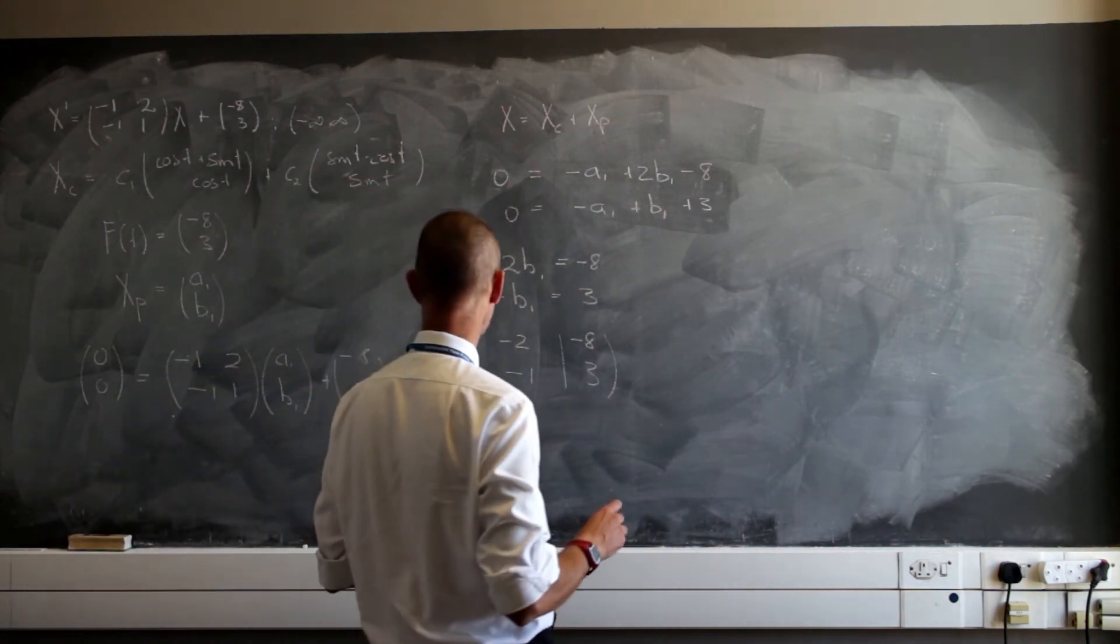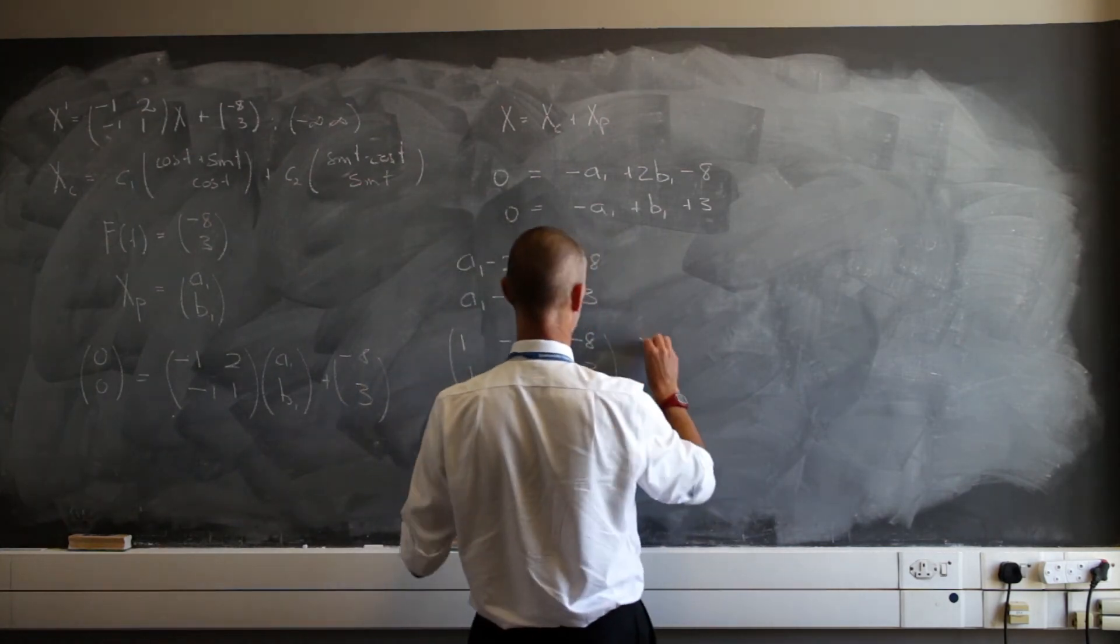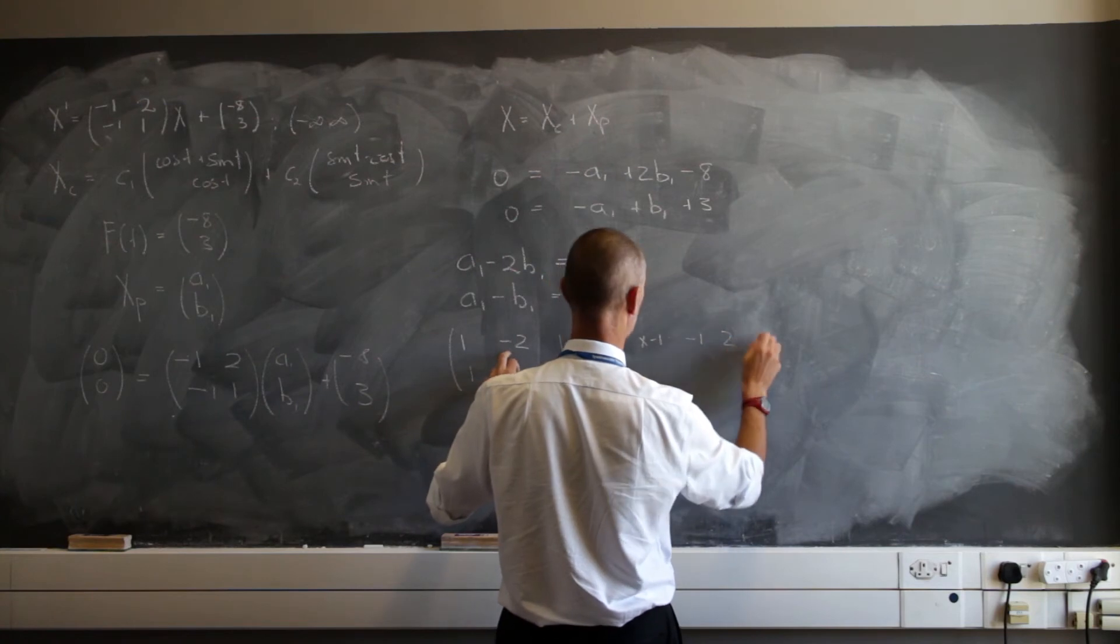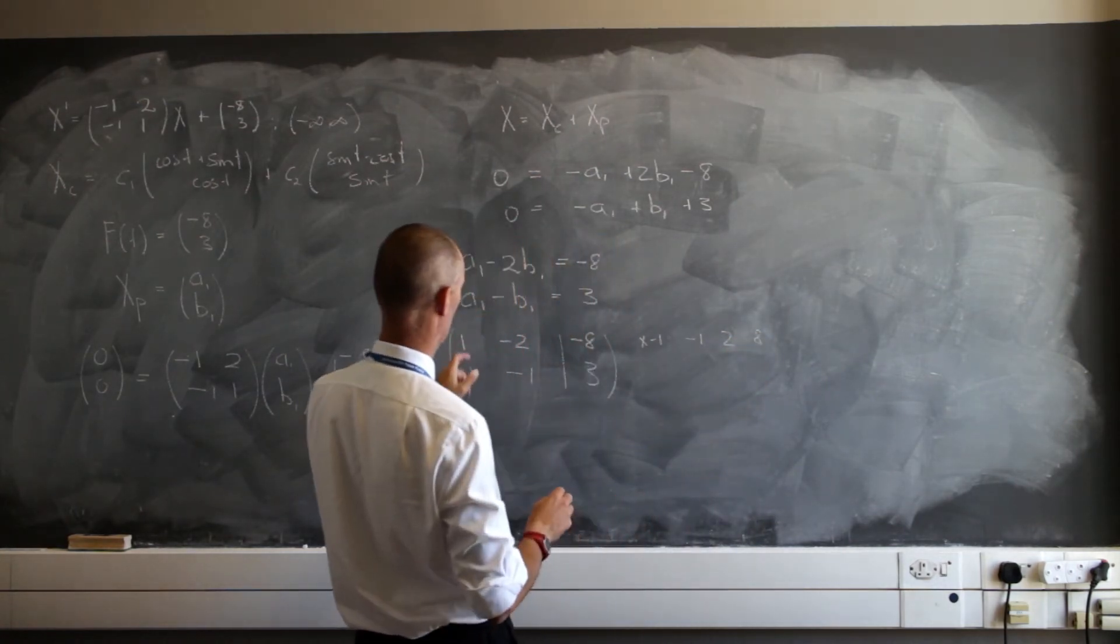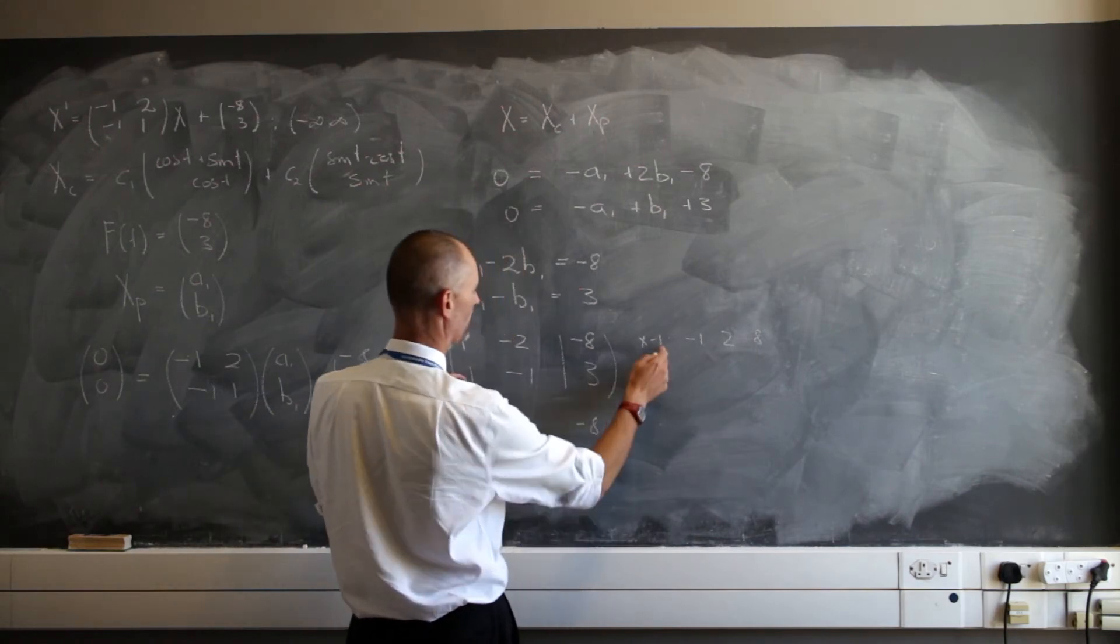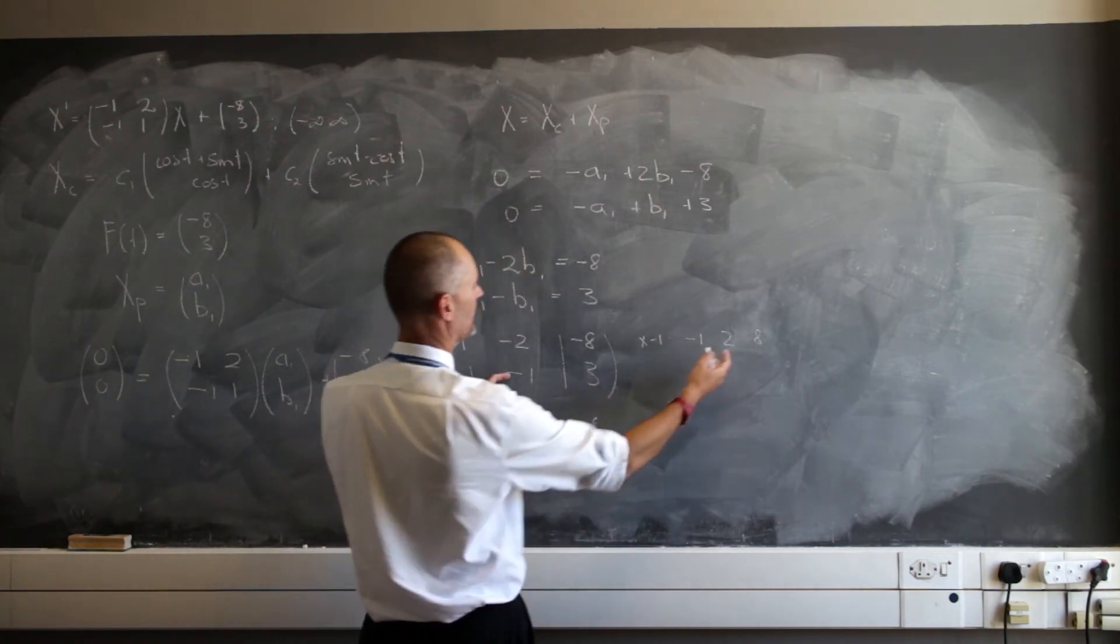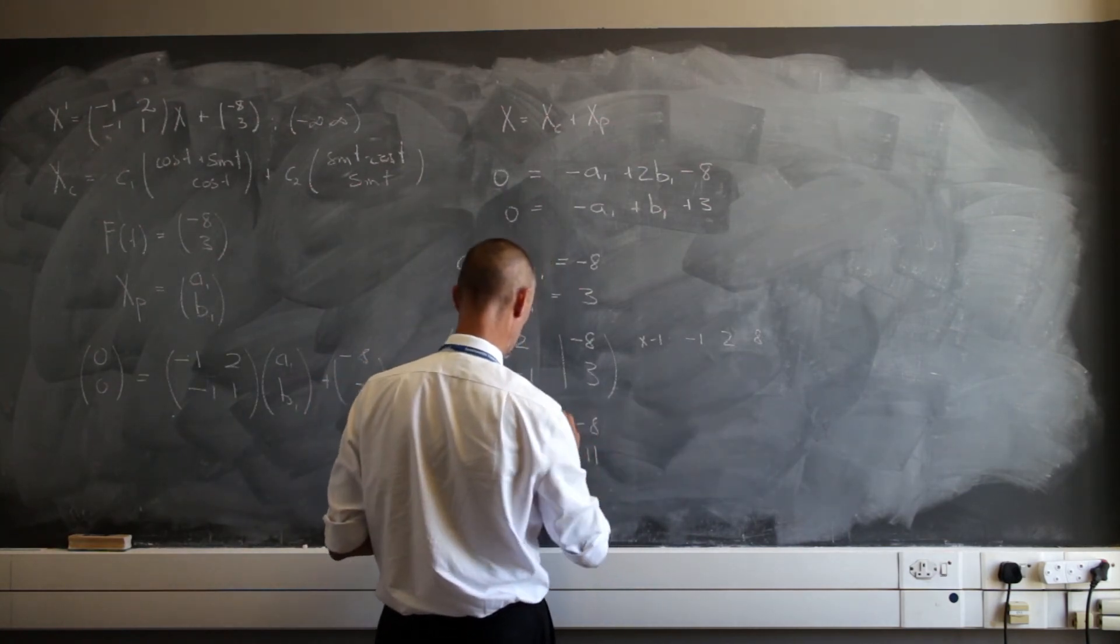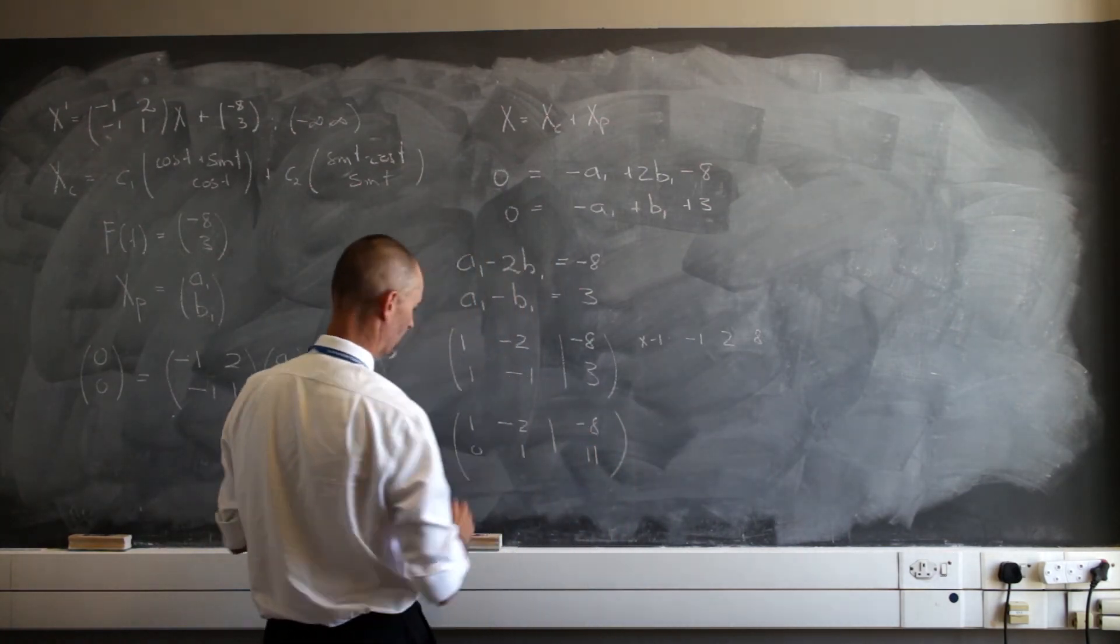Let's have a look. I can multiply this first row out by negative 1. What am I going to get? I'm going to get negative 1, a 2, and an 8. And I can add that to this. So it's 1, negative 2, negative 8. 1 plus negative 1, that's a 0. That's what I want. This is going to be 1, and 3 and 8, that's going to be 11. Beautiful.